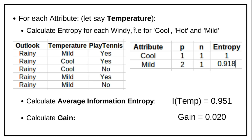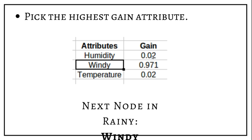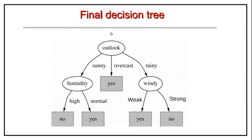Similarly, for windy with outlook equal to rainy: strong has 0 positive and 2 negative (entropy 0), weak has 3 positive and 0 negative (entropy 0). Average information for windy is 0, and gain = 0.971 minus 0 = 0.971. The highest gain value is windy at 0.971, so the next node under rainy will be windy.